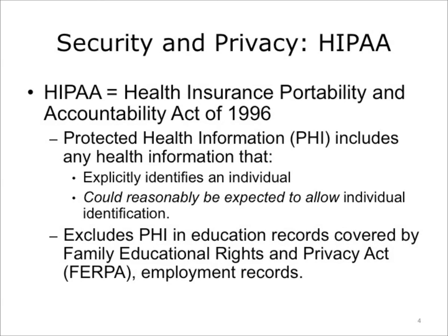HIPAA, the Health Insurance Portability and Accountability Act of 1996, is primarily responsible for governing the protection of individual health data. Many states have also passed legislation to further enhance these federal guidelines. Protected health information, PHI, under HIPAA includes any individually identifiable health information. Identifiable refers not only to data explicitly linked to a particular individual, but also includes health information with data items which reasonably could be expected to allow individual identification. Note that the definition of PHI excludes individually identifiable health information in education records covered by the Family Educational Rights and Privacy Act, FERPA, and employment records held by a covered entity are also exempt.